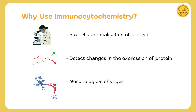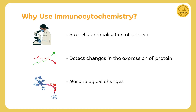Why use immunocytochemistry? First, it allows us to see where proteins are located within the cells, using a microscope to map out cellular architecture. Secondly, we can track changes in protein levels under different conditions, like watching a graph fluctuate to reveal critical insights. Lastly, it helps us identify cellular structure changes, much like observing a neuron to understand diseases and treatments.